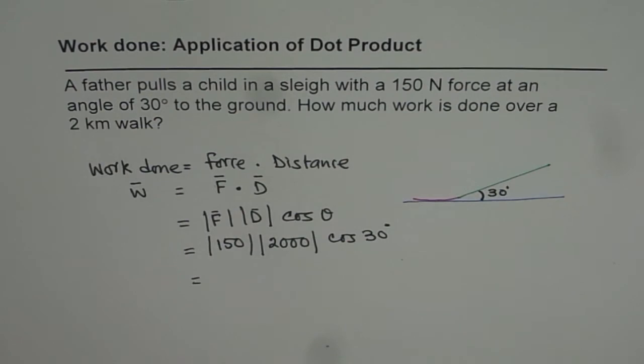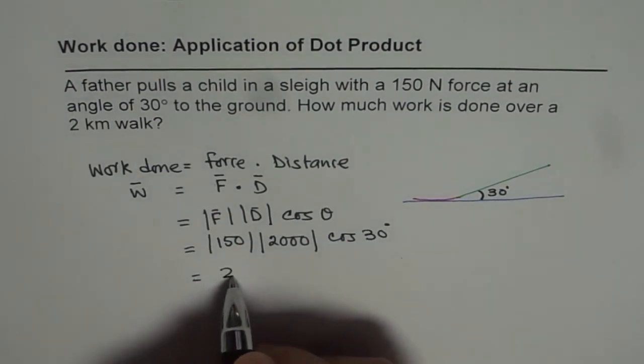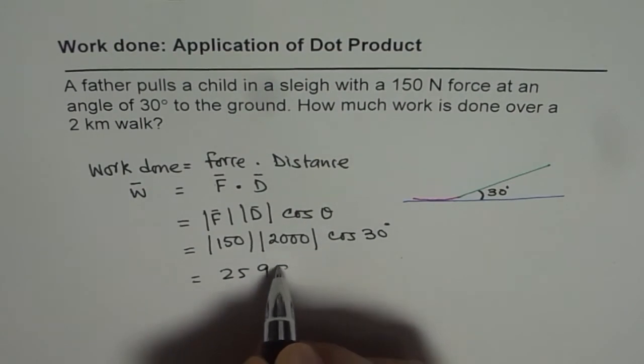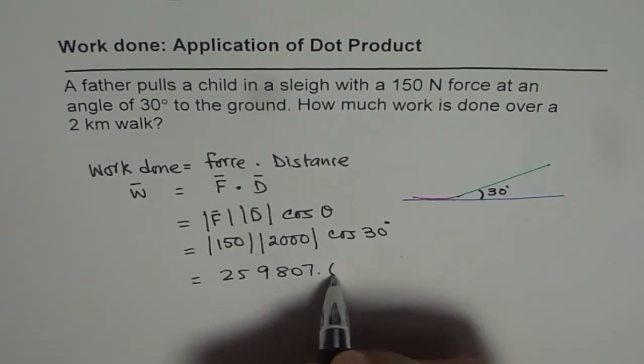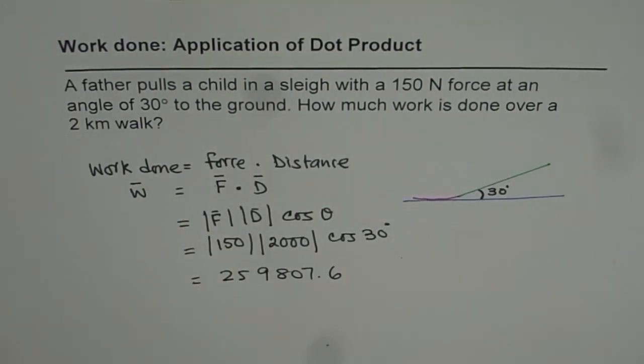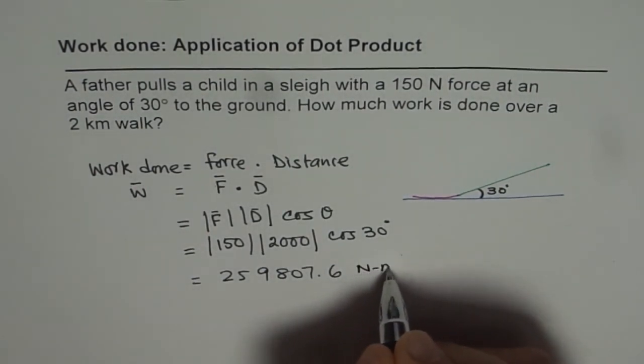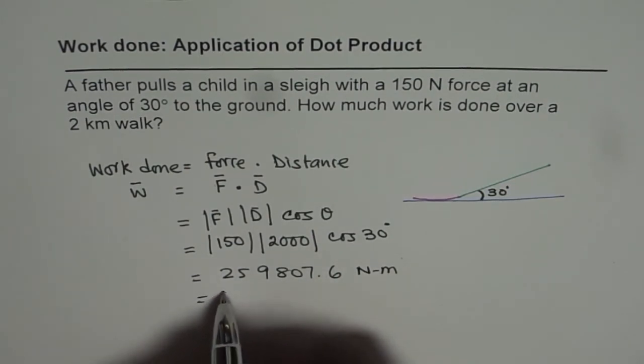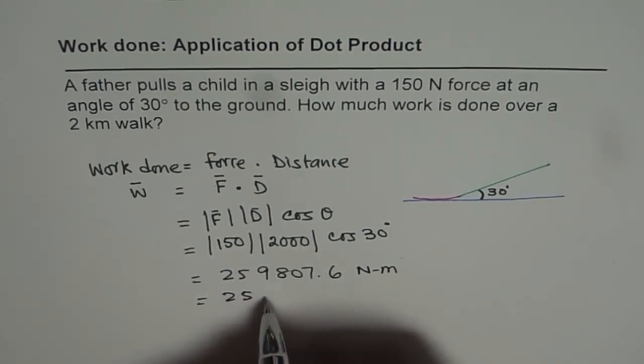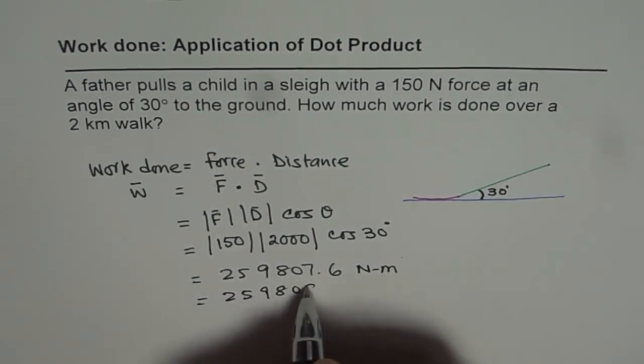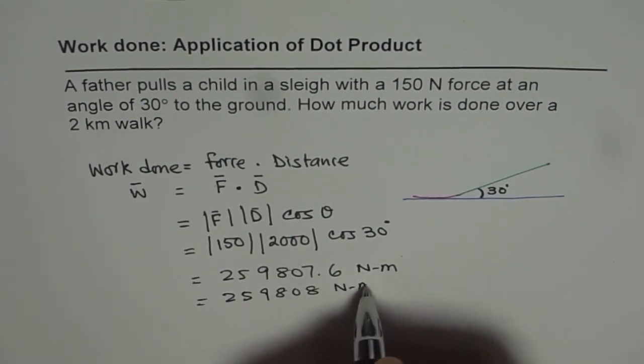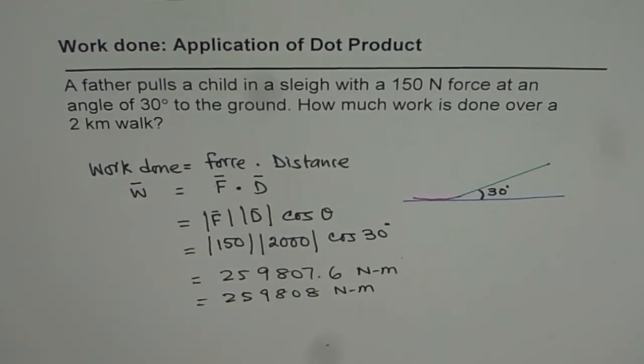So that gives us 259,807.6 newton meters. So we can just write this as 259,808 Nm. So that is the work done in this particular case.